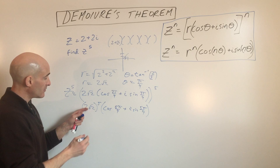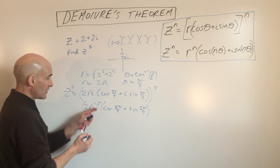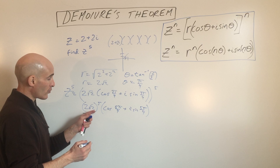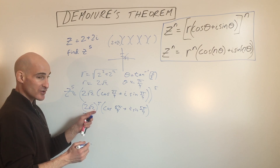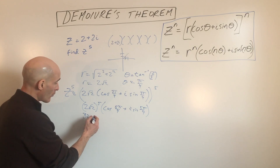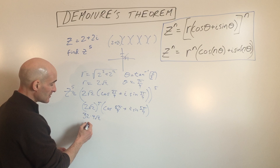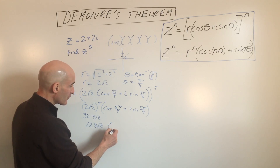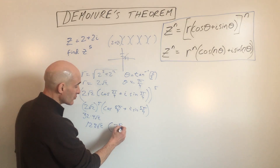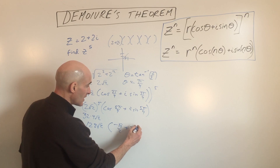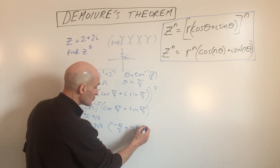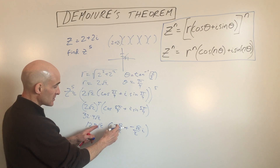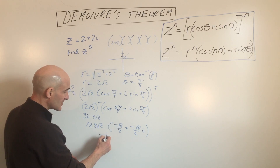Computing 2 root 2 to the fifth: 2 to the fifth is 32, and the square root of 2 to the fifth gives us 4 root 2, so the r term is 32 times 4 root 2, which is 128 root 2. Cosine of 5 pi over 4 is negative root 2 over 2, and sine of 5 pi over 4 is also negative root 2 over 2. Distributing gives 128 root 2 times negative root 2 over 2, which is negative 128.